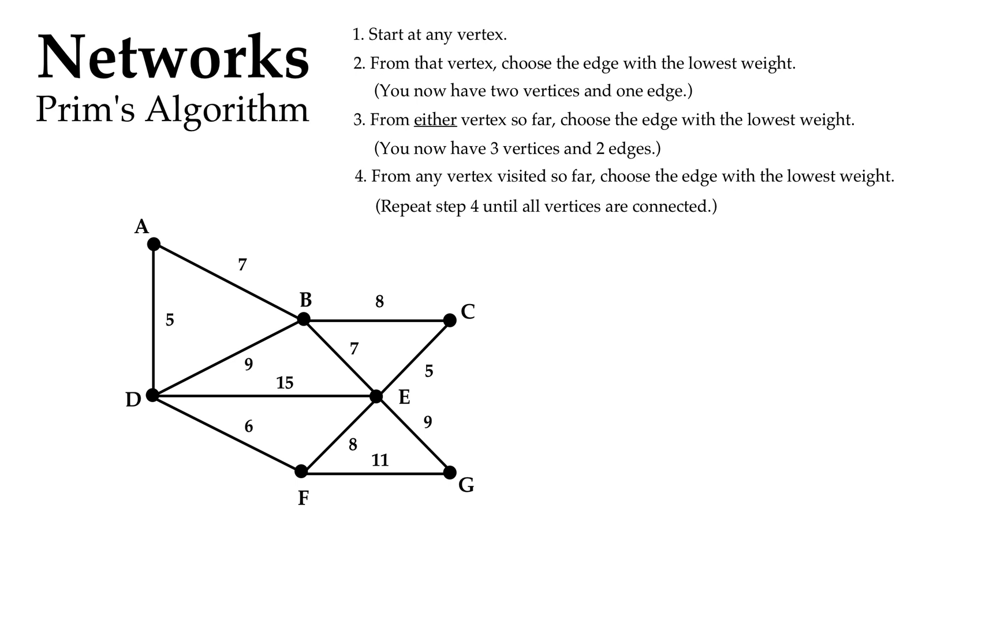I'm going to start at any vertex, and I guess A is a pretty logical place to start. Now from that vertex, from that vertex I'm going to choose the edge with the lowest weight. So I have a choice between a 7 or a 5. I'm pretty sure the 5 is the lowest weight, so I'm going to choose that one and move along there.